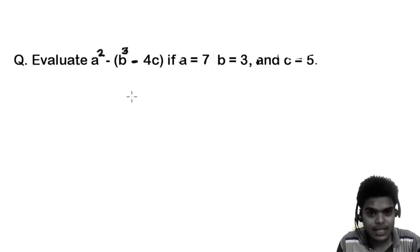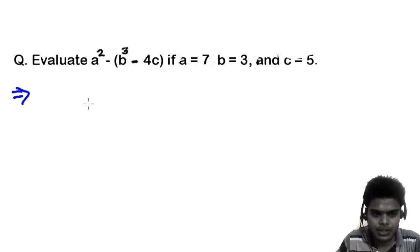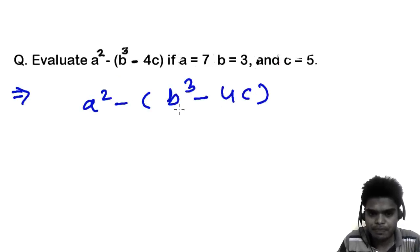Here we have another question based on BODMAS, and this will increase your knowledge definitely. Let me read this question: Evaluate a squared minus the quantity b cubed minus 4c if a equals 7, b equals 3, and c equals 5. So we need to evaluate this thing. Let me first write the expression.